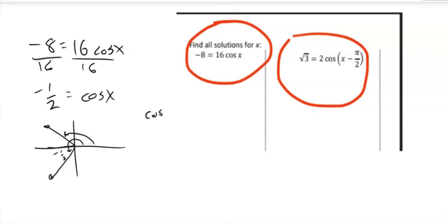Or I could use inverse cosine negative 1 half, give me a decimal approximation. But this first angle right here is 2 pi over 3.